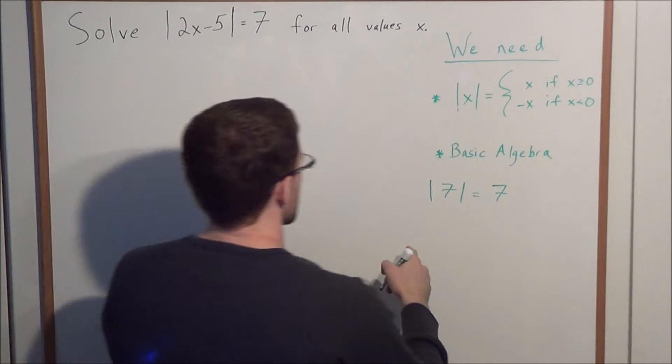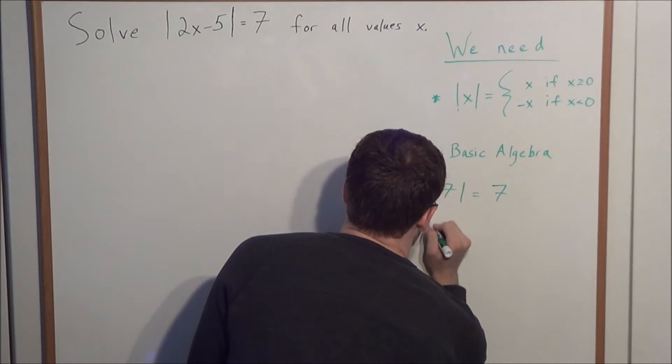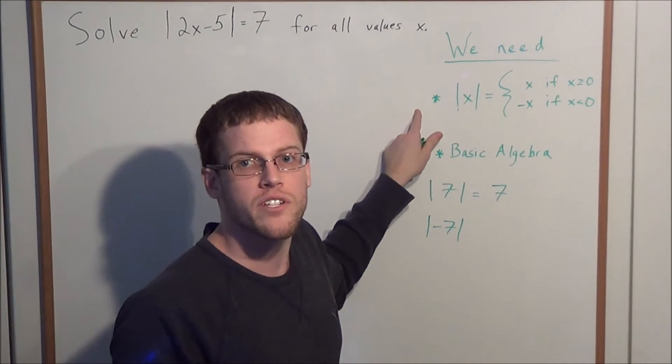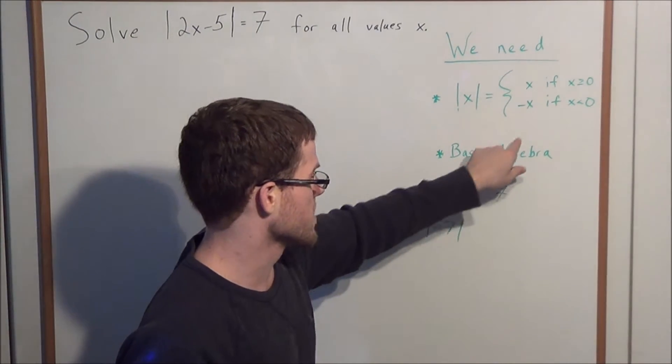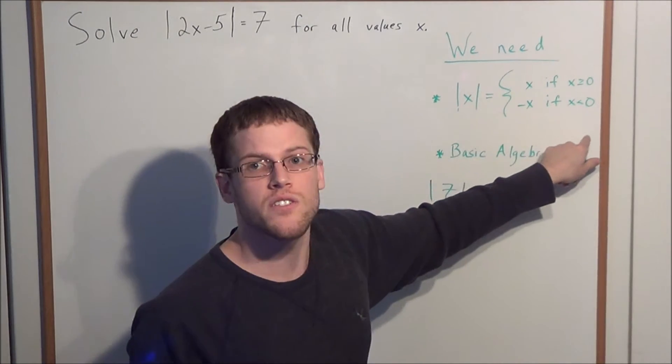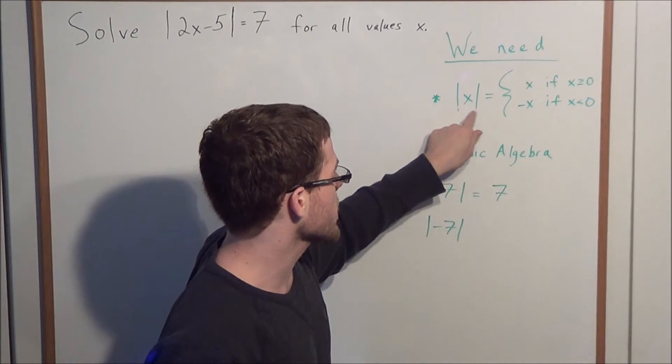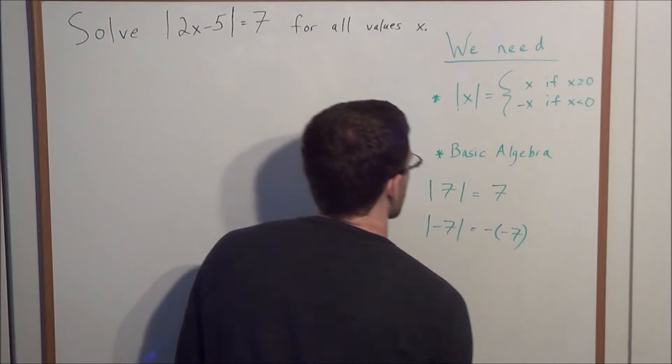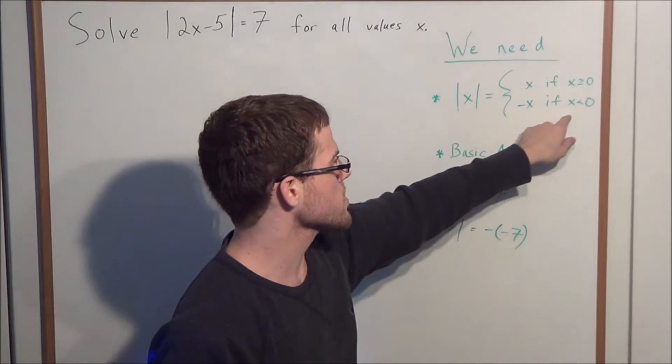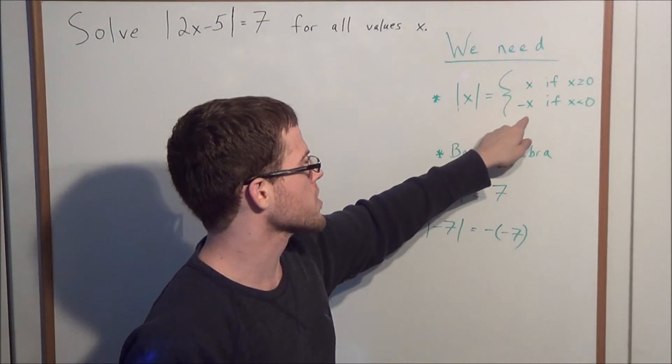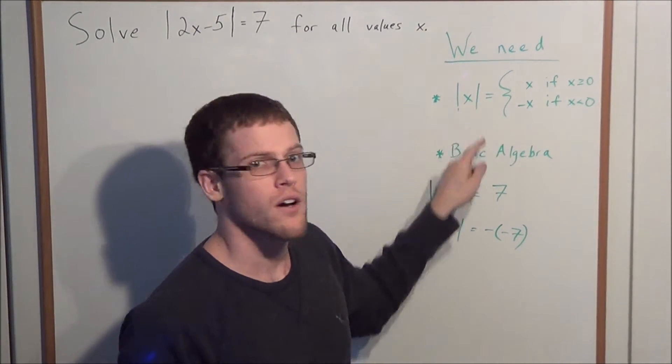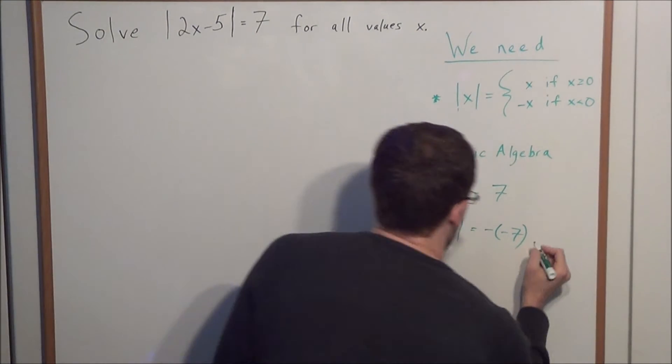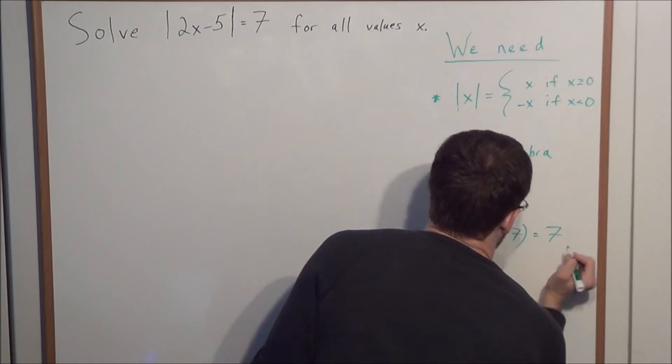But now, the second case, let's say we were looking at the absolute value of negative 7. Using this definition, which category does this fall into? Well, negative 7 is an x value that is less than 0. So the absolute value of negative 7 is going to be equal to negative negative 7. Keeping in mind, when we have an input which is less than 0, the output is going to be the negation of the inner term. So we're going to negate negative 7, and we'll get also a positive 7.